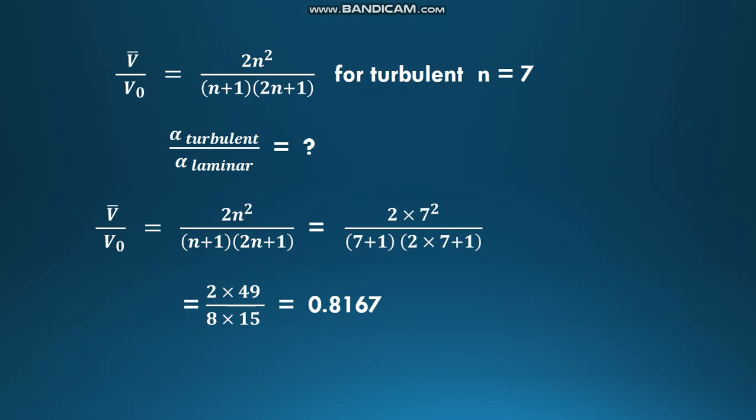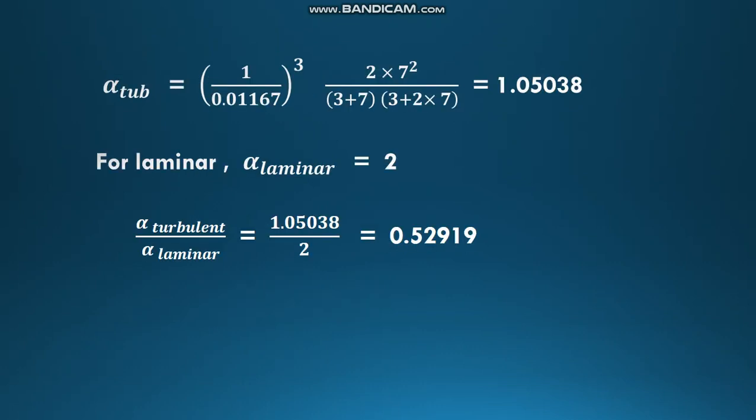Substituting this term in the above equation, we get α_turbulent = (1/0.8167)³ × 2×7²/[(3+7)(3+2×7)]. Calculating this mathematical expression, we get α_turbulent equals 1.0503.